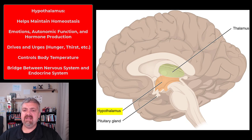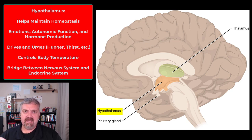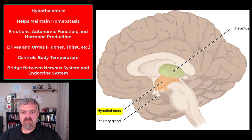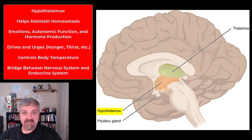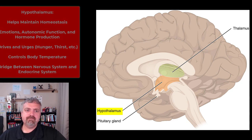You also see on the image here the pituitary gland — the hypothalamus is connected to the pituitary gland. The hypothalamus is part of your nervous system; the pituitary gland is part of your endocrine system — it's your master gland when it comes to the endocrine system. So the hypothalamus is the bridge between your nervous system and your endocrine system. We'll cover that in way more detail in A&P 2.